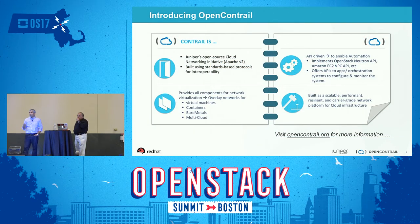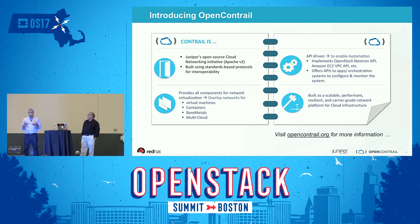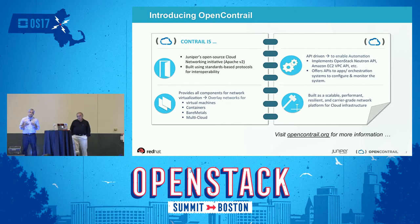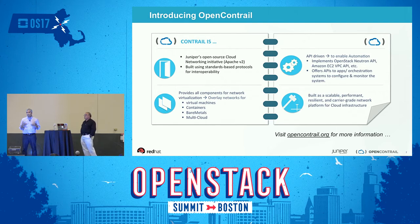OpenContrail is an open source cloud networking initiative using Apache V2 license. It is a completely standards-based implementation — we use BGP, XMPP, and the entire implementation is standards-based. That gives users no need for vendor lock-in. Being open source doesn't necessarily mean you're out of vendor lock-in mode, but in our case it's a completely standards-based solution leveraging protocols that exist today and their extensions, enabling interoperability and multi-vendor scenarios.